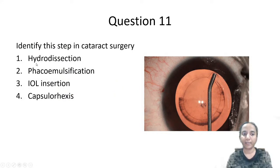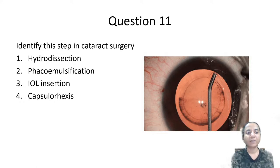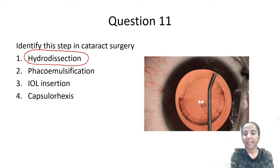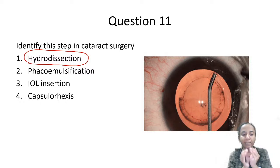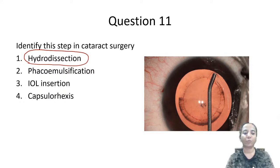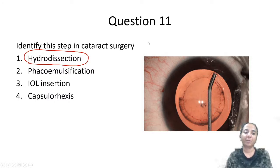Next question: identify this step in cataract surgery. This is hydrodissection. A bent cannula attached to a fluid-filled syringe is taken beneath the capsulorhexis margin and a jet of fluid is injected. This separates the lens fibers from the lens capsule — hence the name hydrodissection.